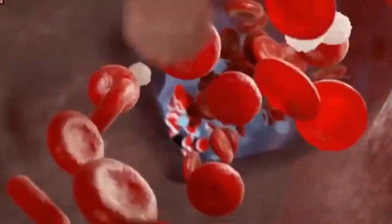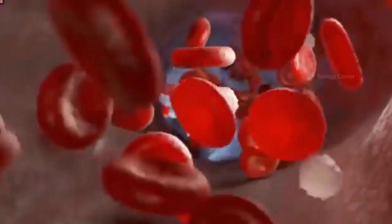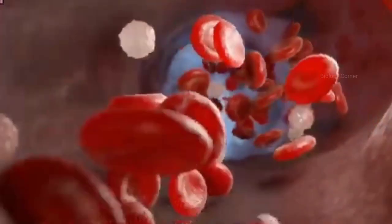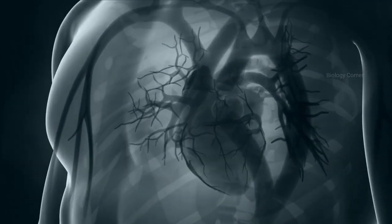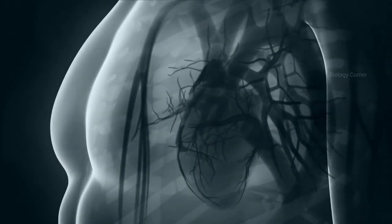When this blood gives oxygen to the cells of our body, then this blood becomes deoxygenated again and this deoxygenated blood from the whole body is brought back to the heart through the blood vessels known as veins.